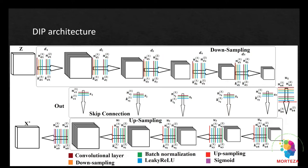As you can see, the output of this network X star is the denoised version of X, which is the noisy image.